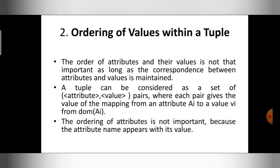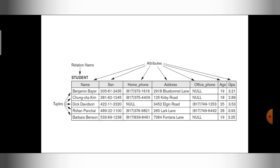The second characteristic is ordering of values within a tuple. The order of attributes and their values is not important, as long as the correspondence between attributes and values is maintained. Correspondence means that for a particular attribute, the value should be matched properly. For example, SSN is the attribute and 305612435 is the value.